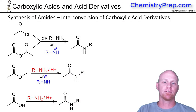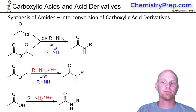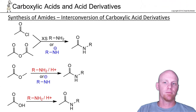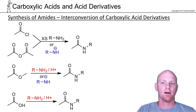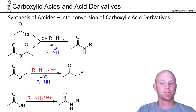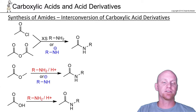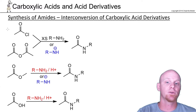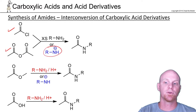Now we shift our focus to amides. As far as synthesis goes, pretty much all the interconversion of the carboxylic acid derivatives applies, and being that amides are pretty low on the reactivity chart — which is a good thing, since they are peptide bonds and we want them to be very stable to keep our proteins together — just about all the other carboxylic acid derivatives can be turned into them. We can turn an acid chloride or an anhydride into an amide using either a strong nucleophile or a weak nucleophile.